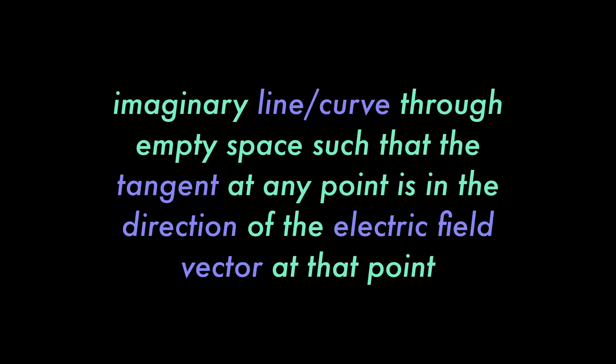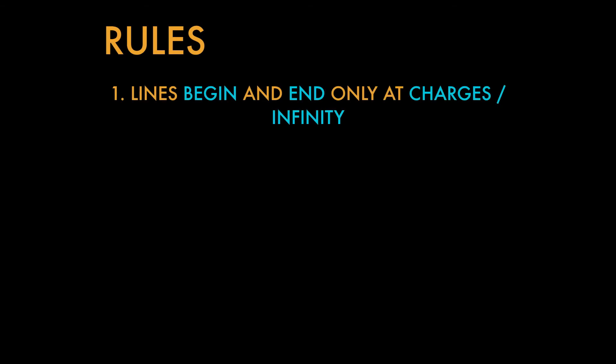All right, so we're going to look into some rules about how electric field lines are drawn. There are four rules we need to follow when we draw electric field lines. The first of which is that when we draw them they have to always go from a positive charge to a negative charge, or from positive charge to infinity, or from infinity to a negative charge.